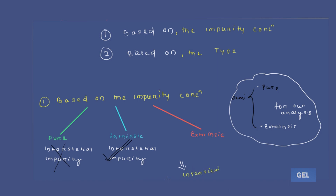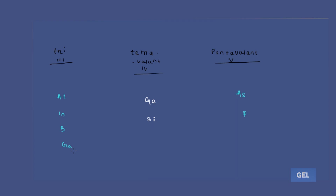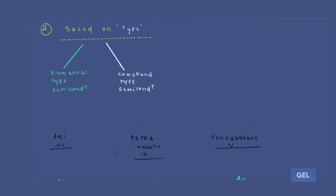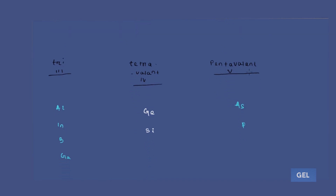The second way of classification is by type: elemental type semiconductor versus compound type semiconductor. What is the difference? Hydrogen and oxygen are elements, but H₂O is a compound. Similarly, semiconductors can be elemental or compound.